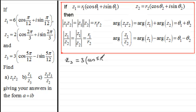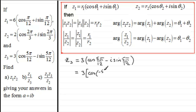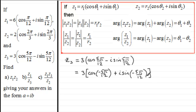We have z3 = 3·(cos(5π/12) − i·sin(5π/12)). Using the well-known result, this equals 3·(cos(−5π/12) + i·sin(−5π/12)). So z3 is now in the correct standard form for applying the division rule.